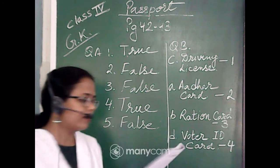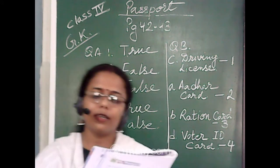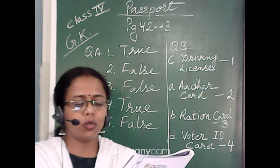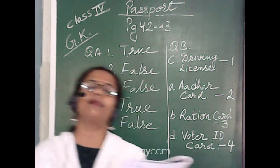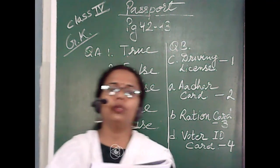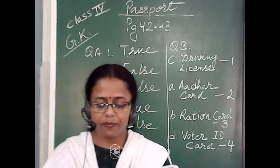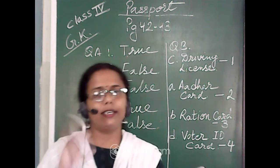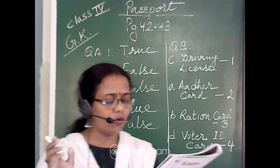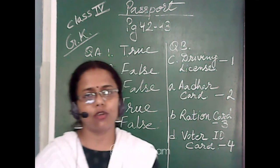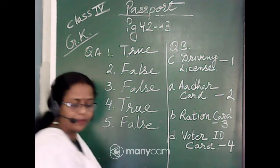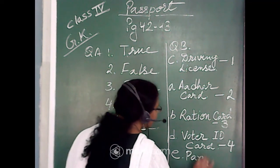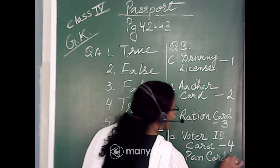Number five: 'This is a card with a ten-character code made up of letters and numbers, issued by the income tax department.' The income tax department issues this card to income tax payers of the country and it is known as a PAN card. It has ten characters including both letters and numbers. So PAN card — option E — is matched with five.